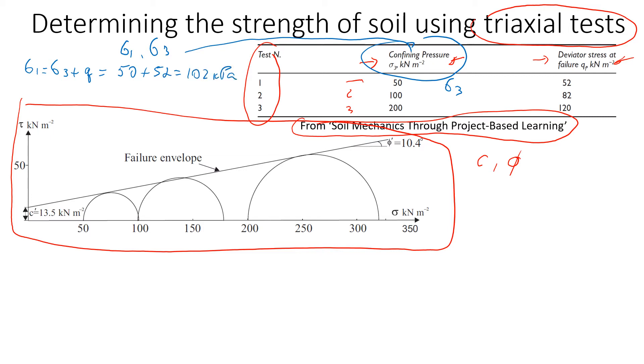For the second test, we do the same thing. The confining pressure is 100 plus the deviator stress of 82, so the major principal stress will be 182 kPa.